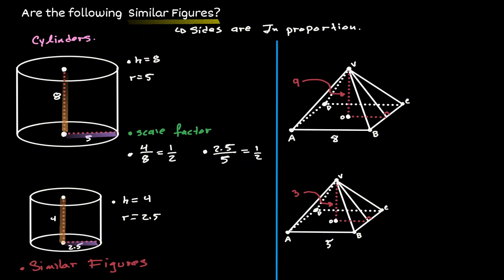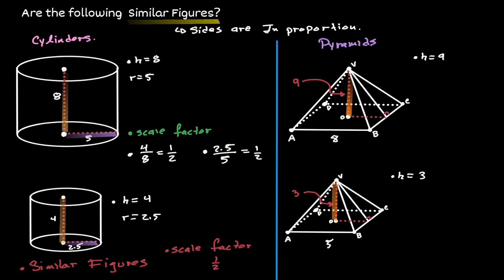The scale factor is 1 half. Now let's concentrate on the two pyramids on the right-hand side and try to determine if both pyramids have a scale factor. Let's start by comparing the height of the pyramid on top with the height on the bottom. The height is 9 on top and 3 on the bottom, so one possible scale factor would be 3 divided by 9, which is equivalent to 1 third.